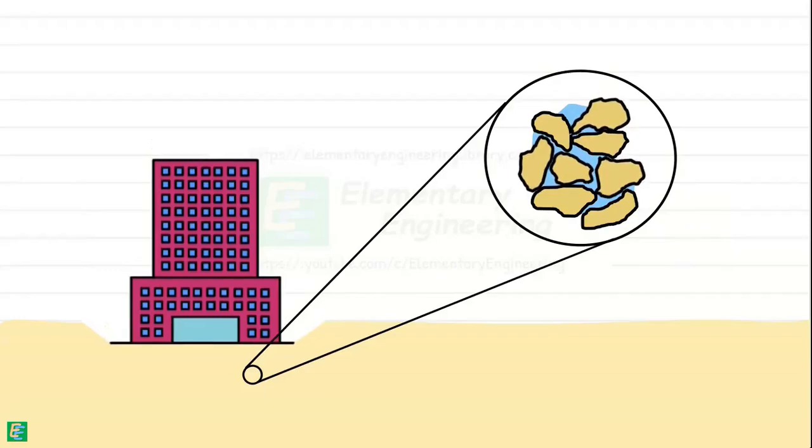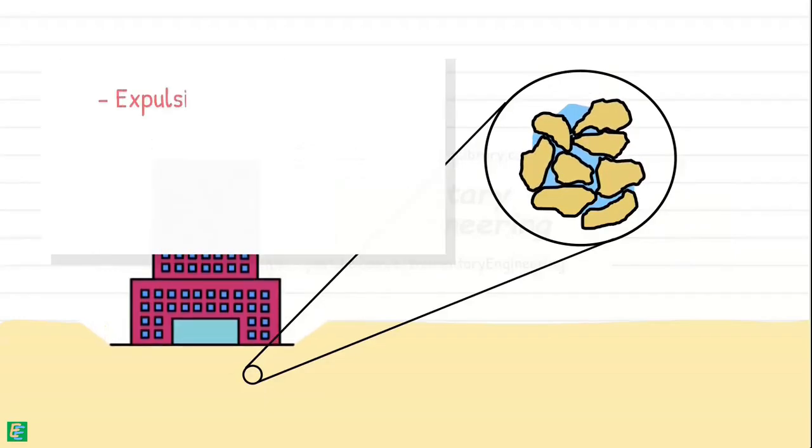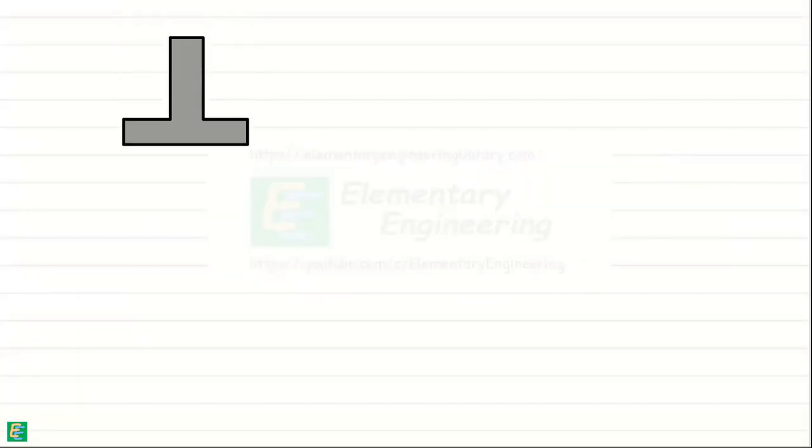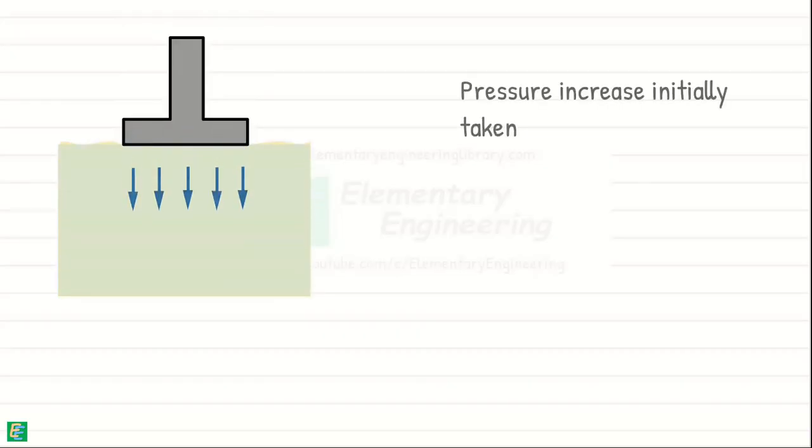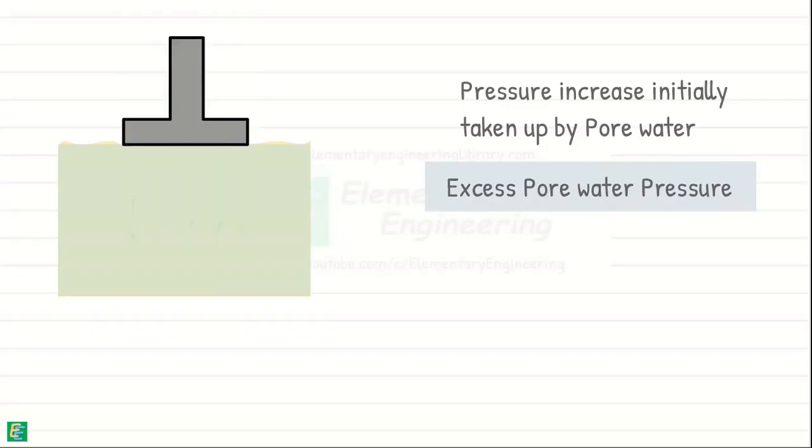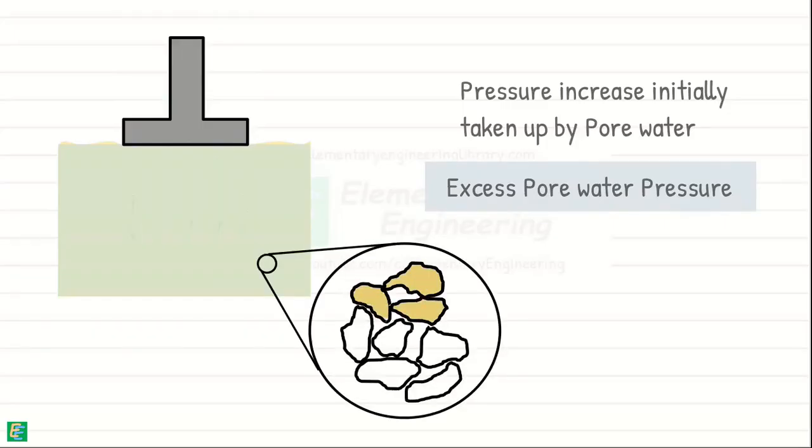It occurs mainly because of the gradual expulsion of water from the voids and a rearrangement of soil particles. When a load is applied to the saturated soil, the pressure increase is initially taken up primarily by pore water, creating excess pore water pressure. This occurs because of the inability of water to escape quickly from the compressed soil pores.